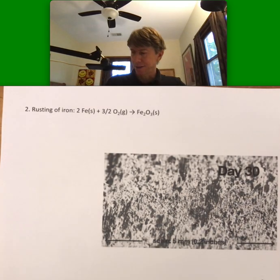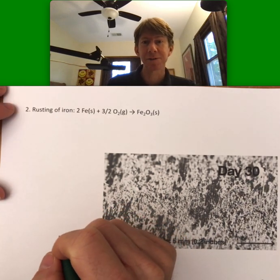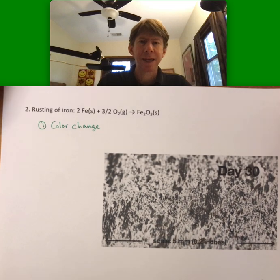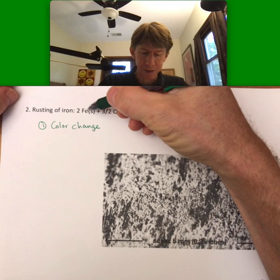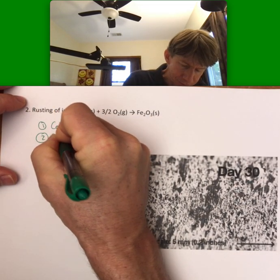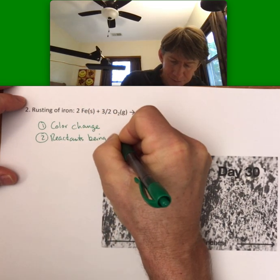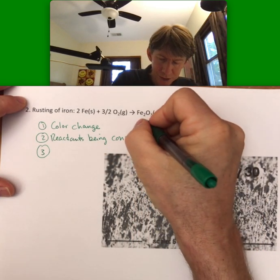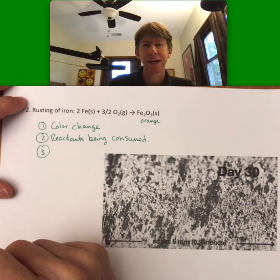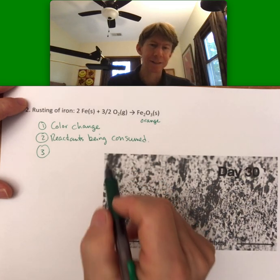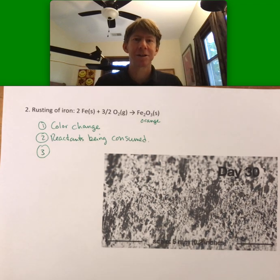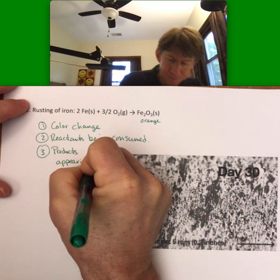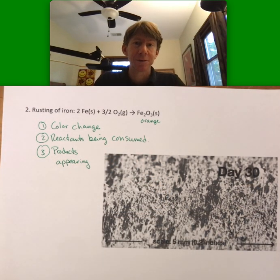So in this particular video, the evidence of chemical reaction is going to be color change. And harder to see, but happening, is that the iron is being consumed — the reactants are being consumed. The orange color is the rust, and products are being formed — they're appearing, you can see them. So products appearing, or being produced, is further evidence of a chemical reaction.